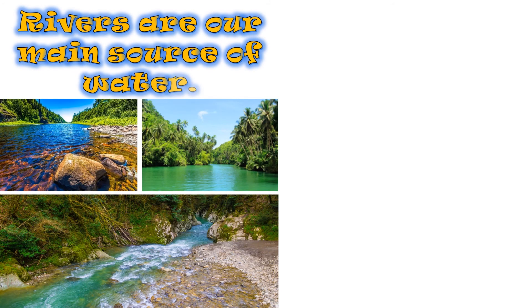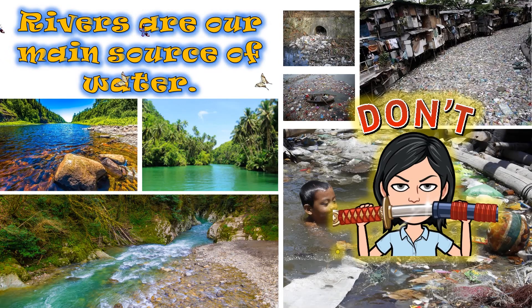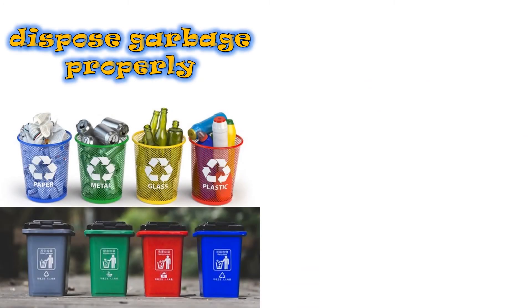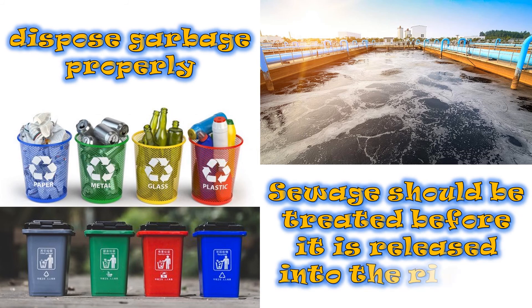Rivers are our main source of water. We should not throw garbage or any waste materials into rivers. We should dispose of garbage properly in trash bins. Sewage should be treated before it is released into the rivers.